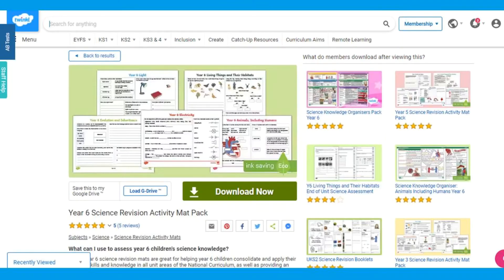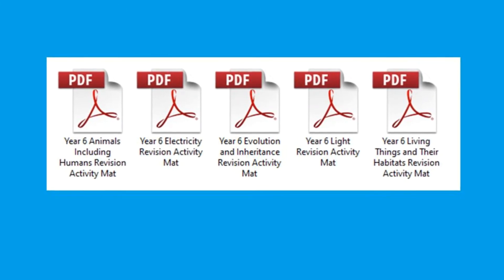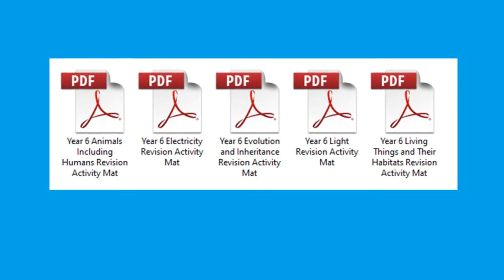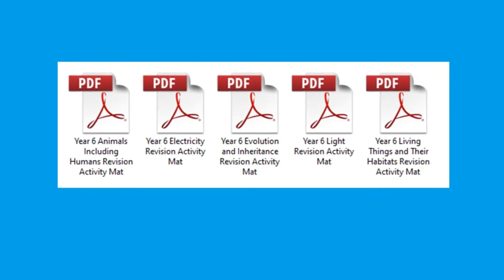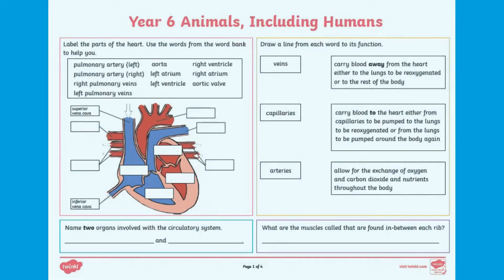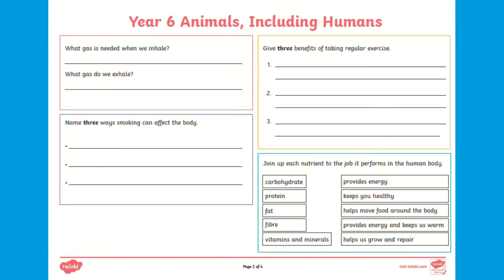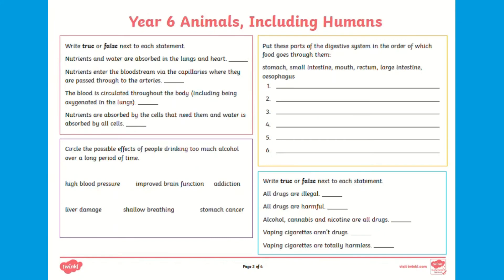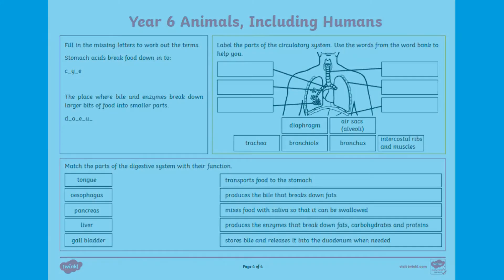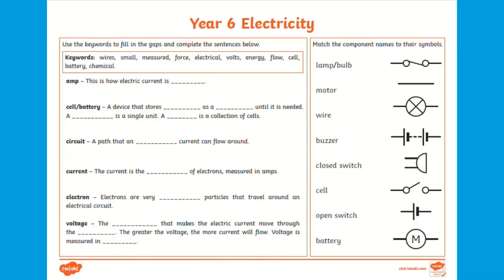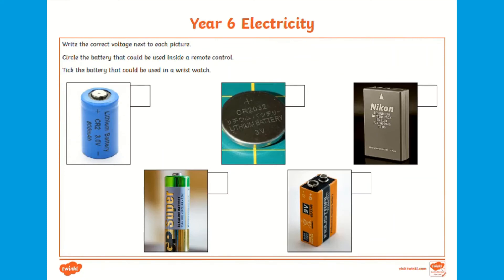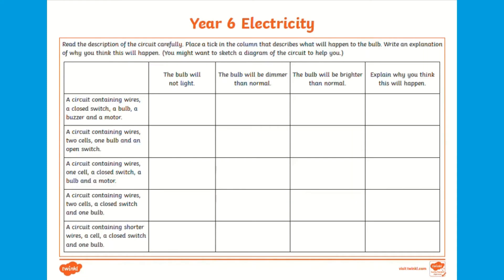These activity mats are also available as a pack. This Year 6 pack contains activity mats for all topics covered, such as living things and their habitats, and animals including humans. These maps contain a range of question styles for Year 6 pupils to answer independently using their knowledge. Once marked, any gaps in knowledge can be identified and targeted through careful planning.